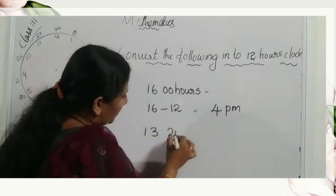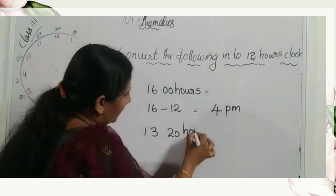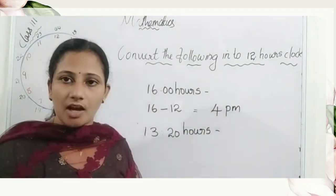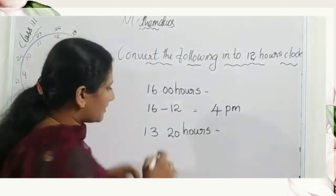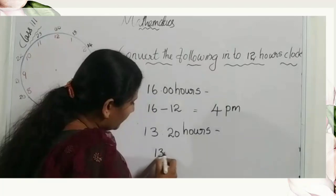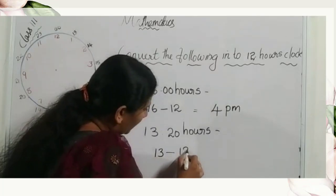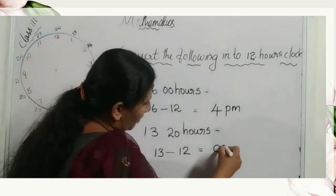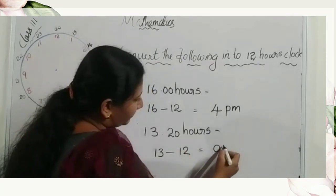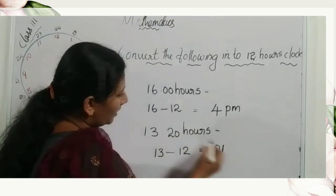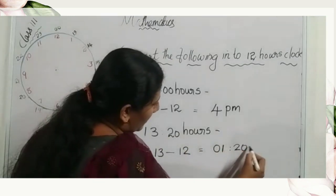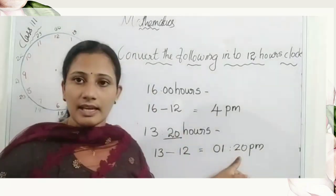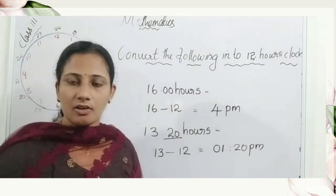Thirteen twenty hours — convert into the twelve hour clock system. We subtract twelve from thirteen: thirteen minus twelve equals one. The twenty minutes stay unchanged. So thirteen twenty hours is one twenty p.m.